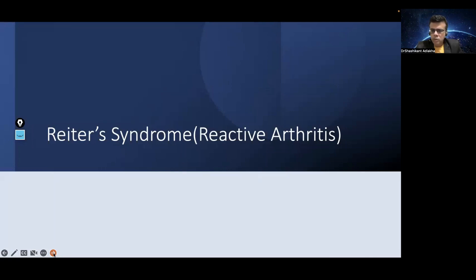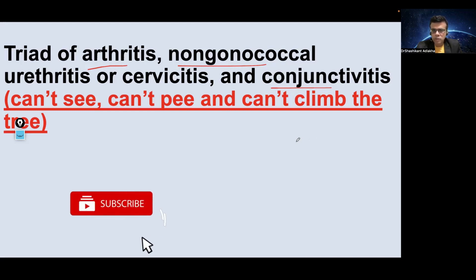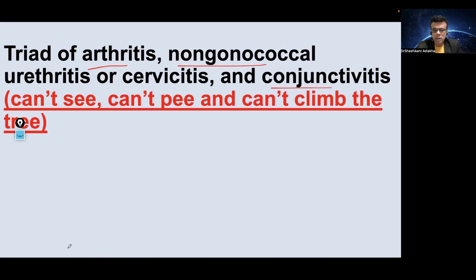What is Reiter's syndrome? It is a triad of arthritis, and urethritis or cervicitis — which is caused by non-gonococcal species, so gonococcal should be excluded — and conjunctivitis. The mnemonic is: can't see, can't pee, and can't climb a tree. These are the three cardinal manifestations of Reiter's syndrome.